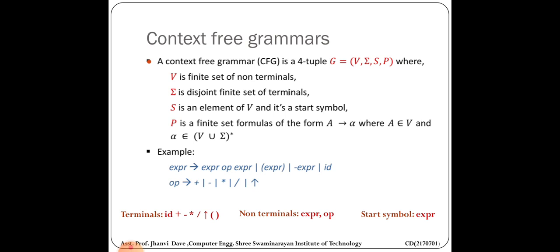Sometimes examples may also use small letters as variables — don't get confused in that case. If small letters are generating production rules, we can also call them non-terminals or variables, but generally non-terminals use capital letters. The starting symbol is the symbol from which your grammar starts — here the grammar starts from expr, so expr is the starting symbol. This we have already seen in TOC.